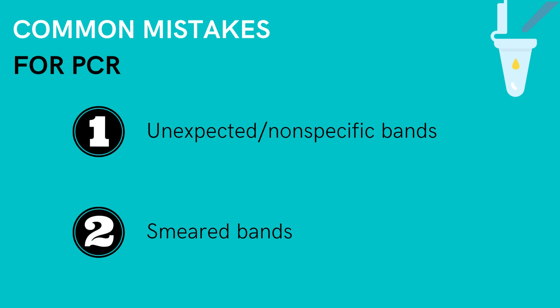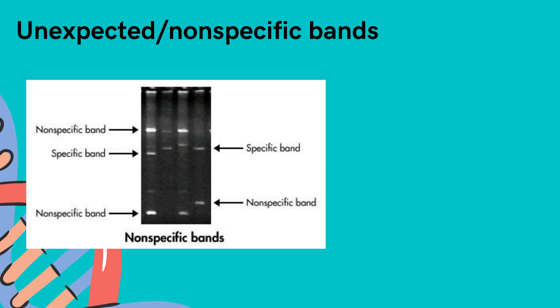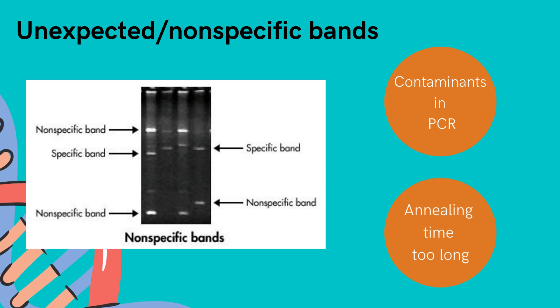Although weak or faint bands seem to be the most common source of error, there is still the occurrence of unexpected or nonspecific bands and smeared bands which might arise. This image depicts the difference between a nonspecific and a specific band. As you can see, the nonspecific bands are those that do not correlate to the expected result. In order to troubleshoot this, make sure the PCR is free of contaminants and have an annealing time of at least 30 seconds.